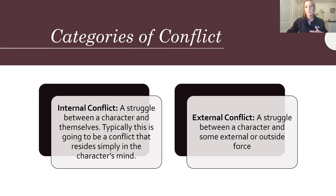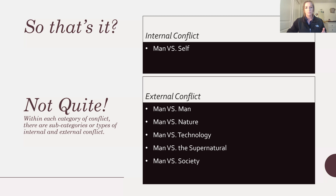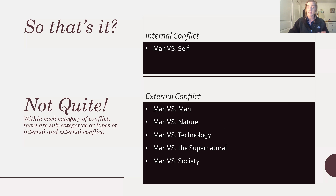So let's get into the subtypes of these conflicts. For internal conflict, there's only one subtype: man versus self. And for external conflicts, you have quite a few more — man versus man, man versus nature, man versus technology, man versus supernatural, and man versus society.